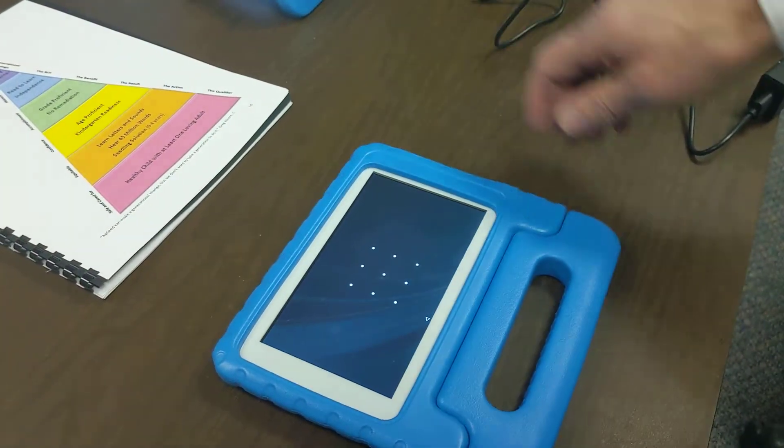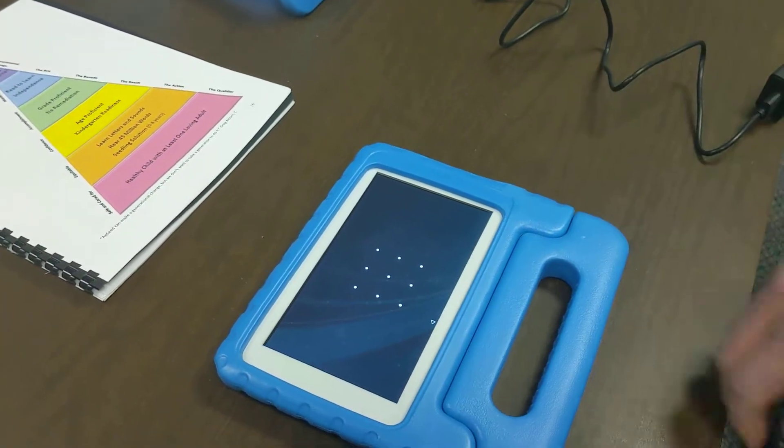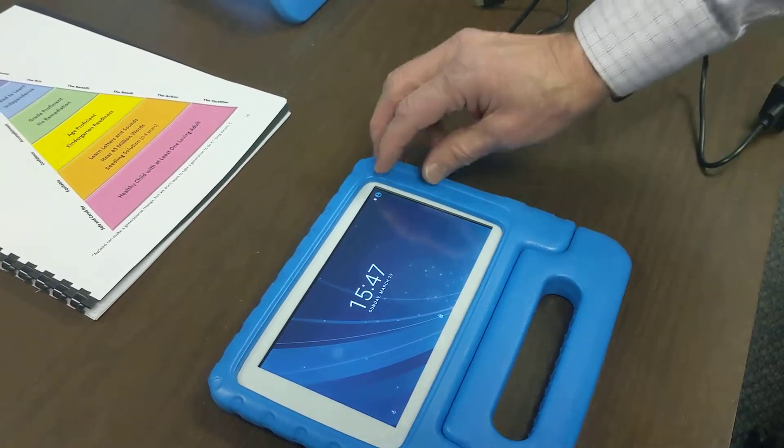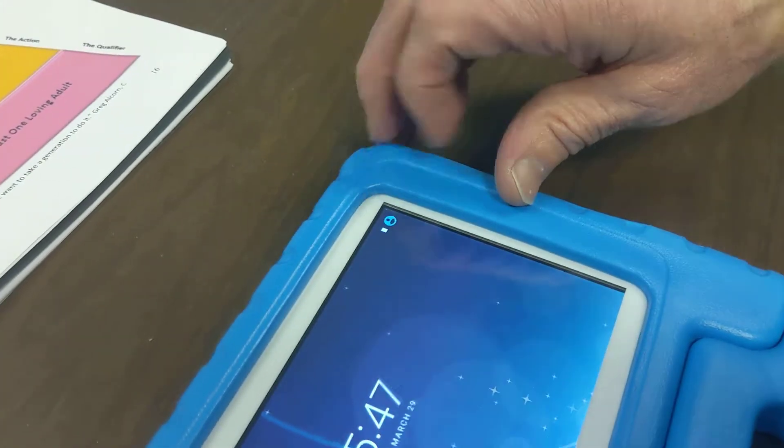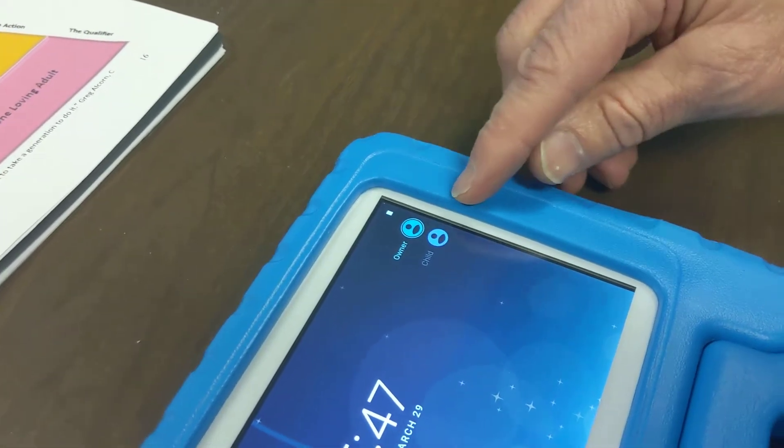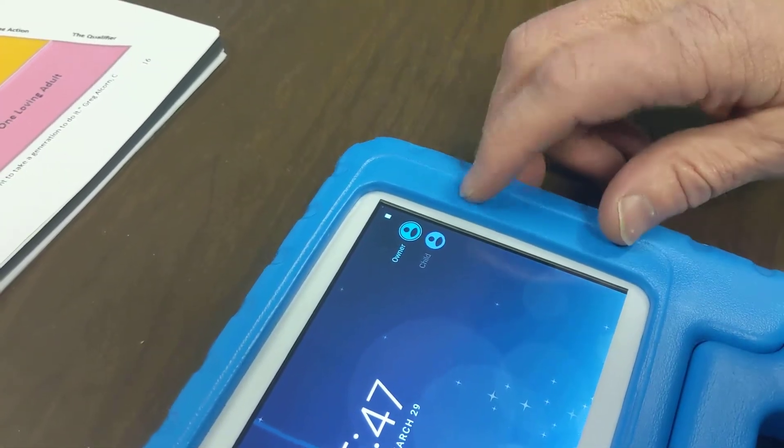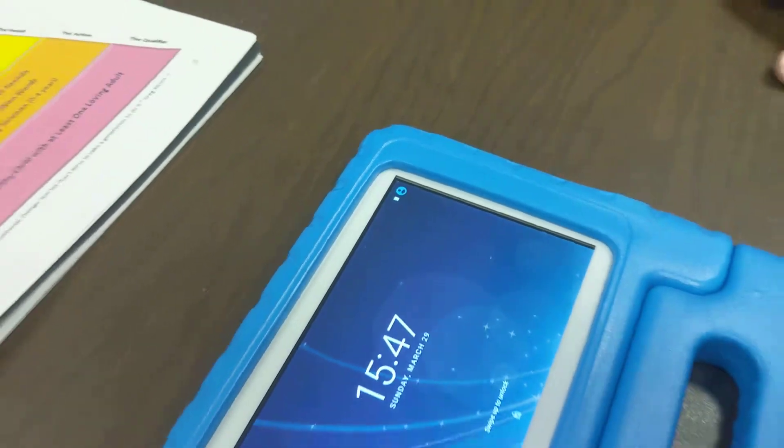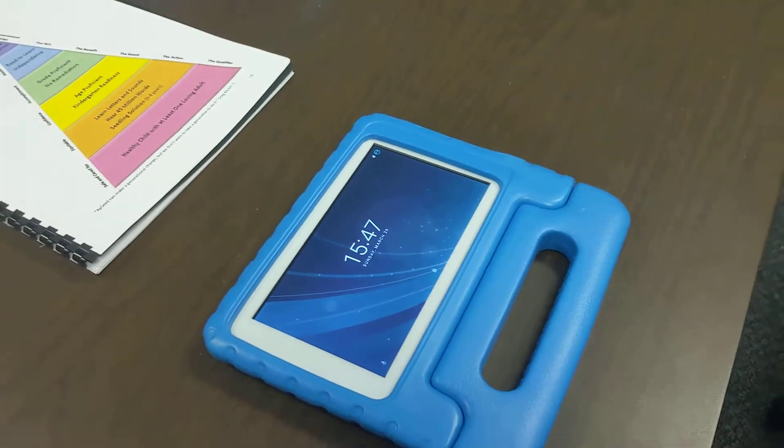There are two screens. One is the wrong screen, called the administrative screen. If you're ever on that, come up here to the top and hit this button right here, which changes it from owner to child. You always want to be in the child phase.